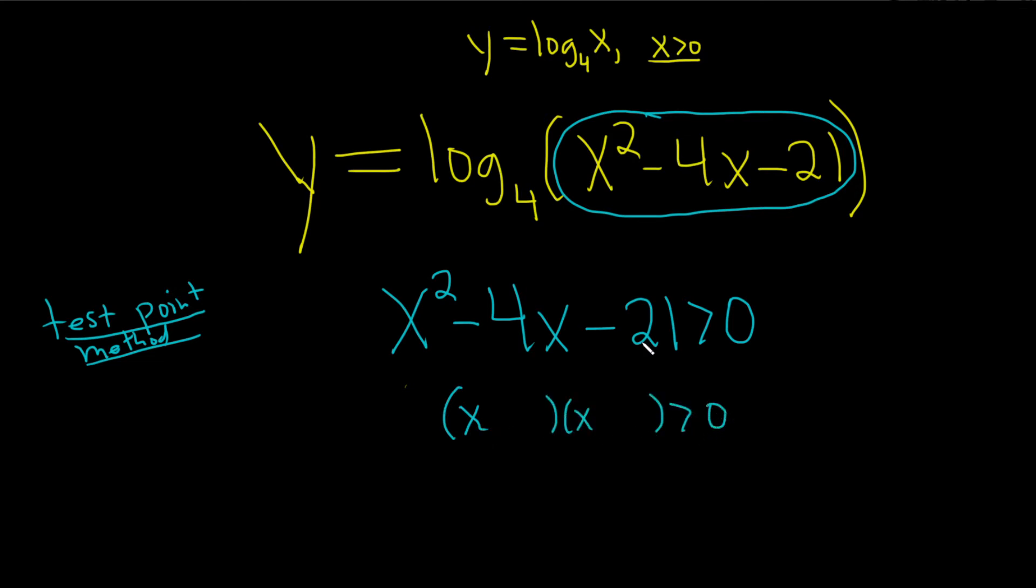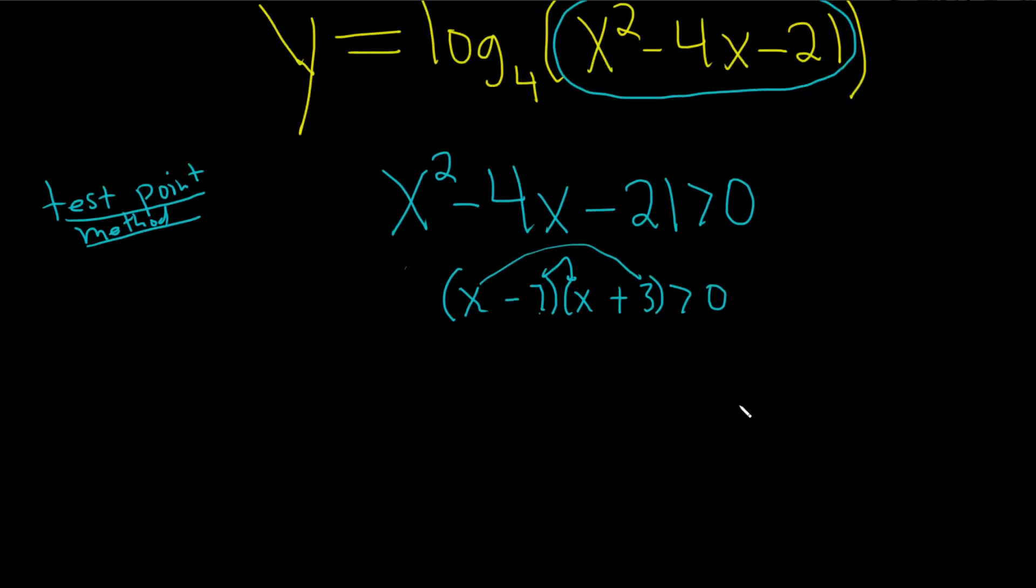So we need two numbers that multiply to negative 21 and add to negative 4. Well, 7 and 3. And then we'll make the bigger one negative. Because if you do negative 7x plus 3x, you get negative 4x. And negative 7 times 3 is negative 21.